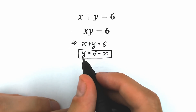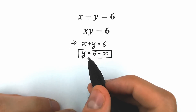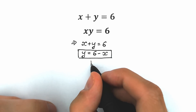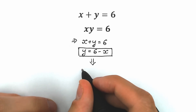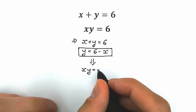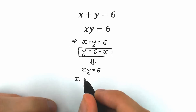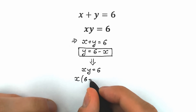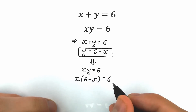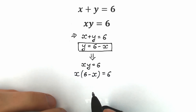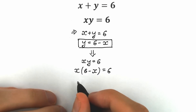We have the second equation: x times y equals 6. So right now let's plug in 6 minus x instead of y. Our second equation becomes x times (6 minus x) equals 6. As you can see, nothing hard here. It looks like a quadratic equation when we open the parentheses.